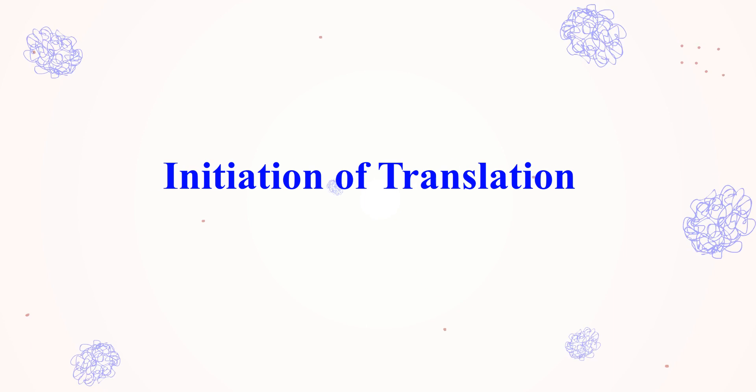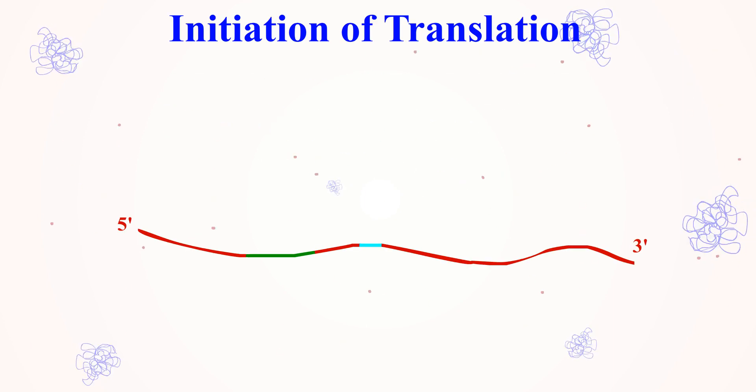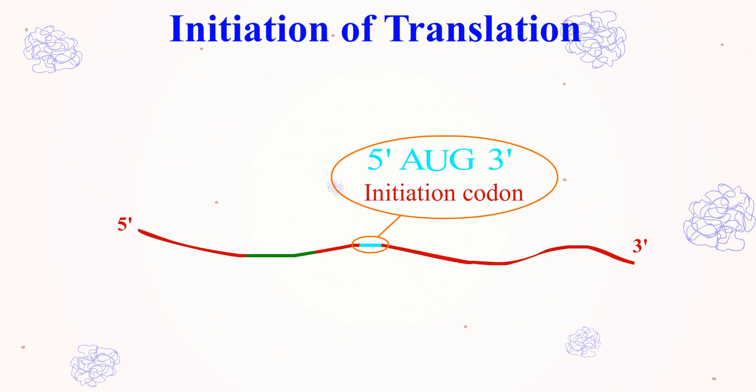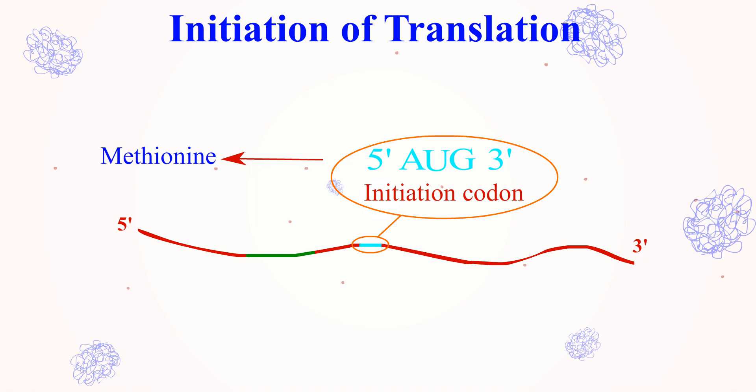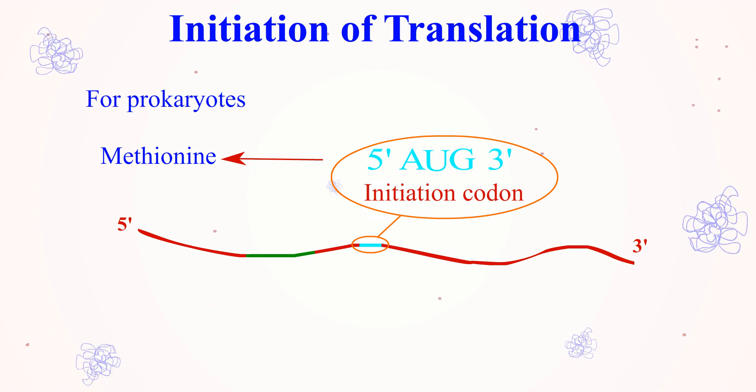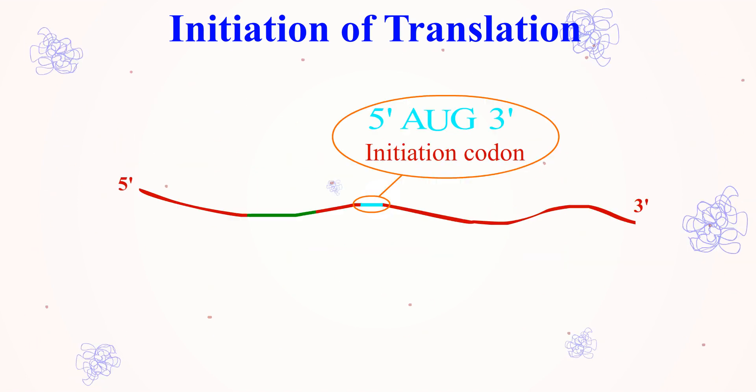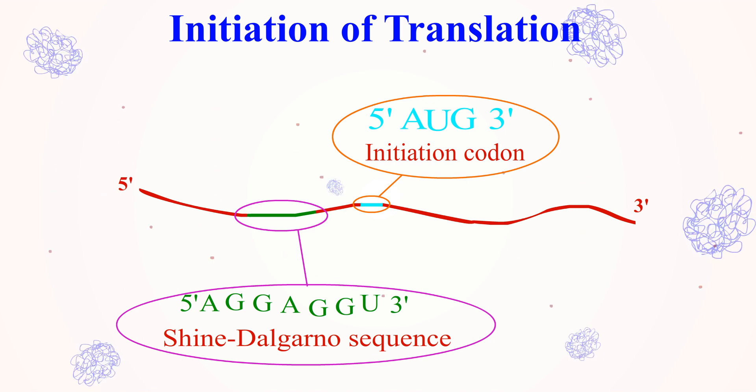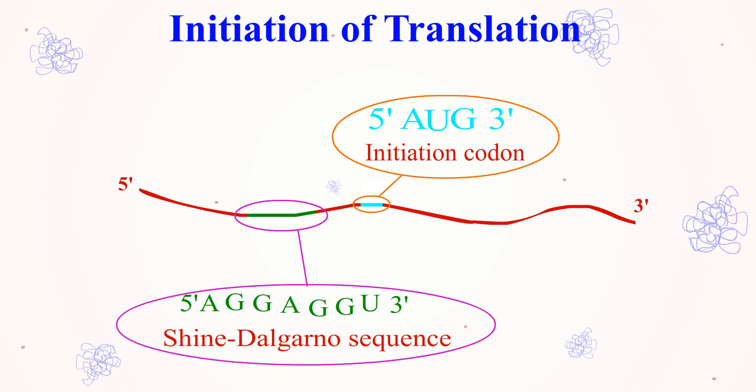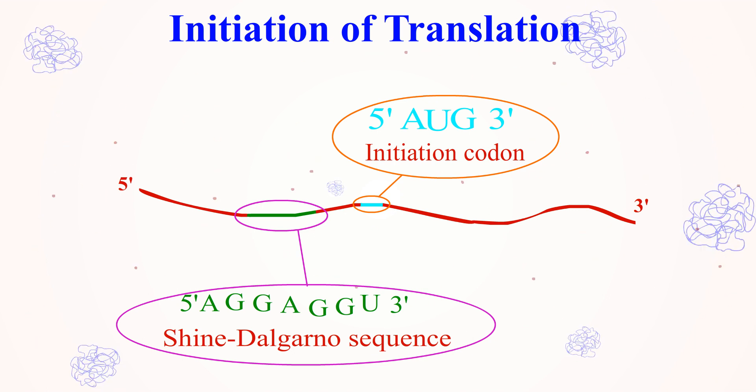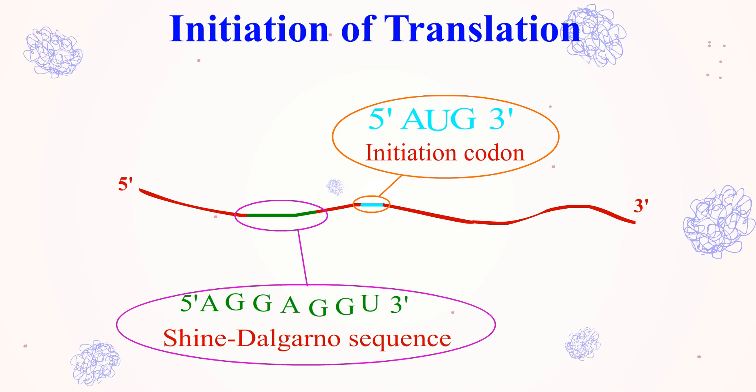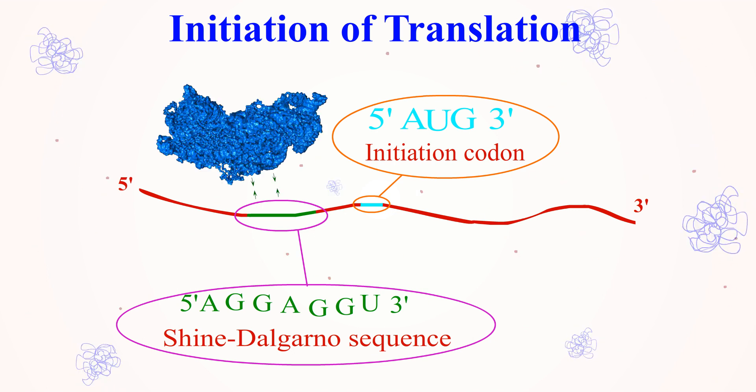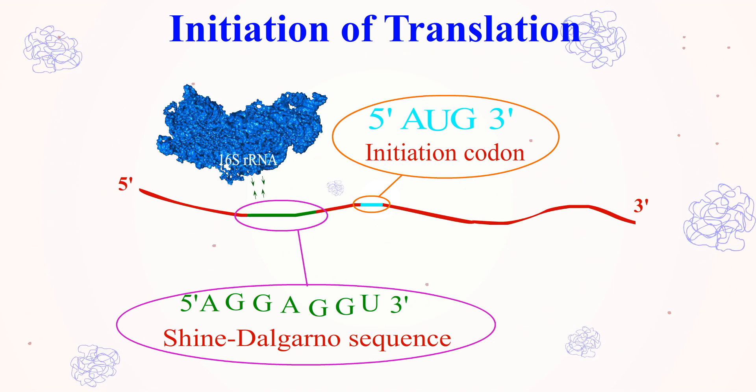Initiation of translation: The first codon of all mRNA is AUG, which codes for the amino acid methionine. For prokaryotes, it is N-formyl methionine. The binding site of the 30S ribosomal subunit is a short sequence rich in purines, 5'-AGGAGGU-3', named the Shine-Dalgarno sequence, which lies 5' to the AUG initiation codon and is complementary to 16S rRNA of 30S ribosomal subunit.